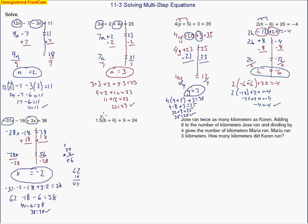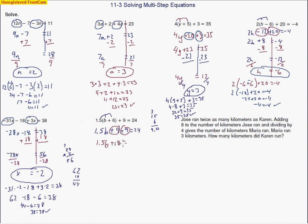Over here, distributing the 1.5. So 1.5b plus — working off to the side — 6 times 1.5 gives me 9. Move the decimal over, so it's 9. Plus 9 equals 24. I end up adding those two 9s together — they're the same type of terms, called like terms. So I have 1.5b plus 18 equals 24.